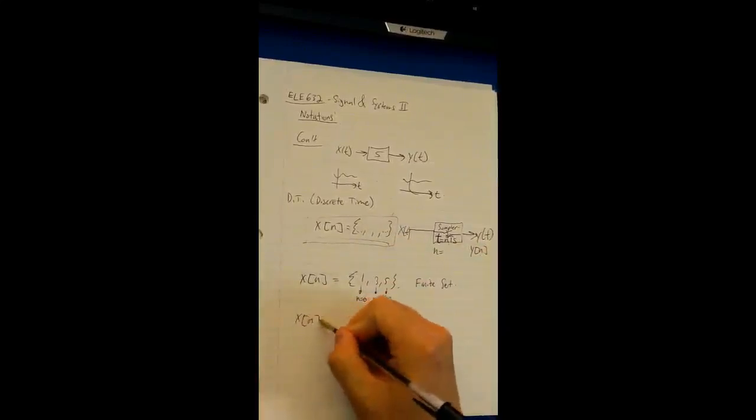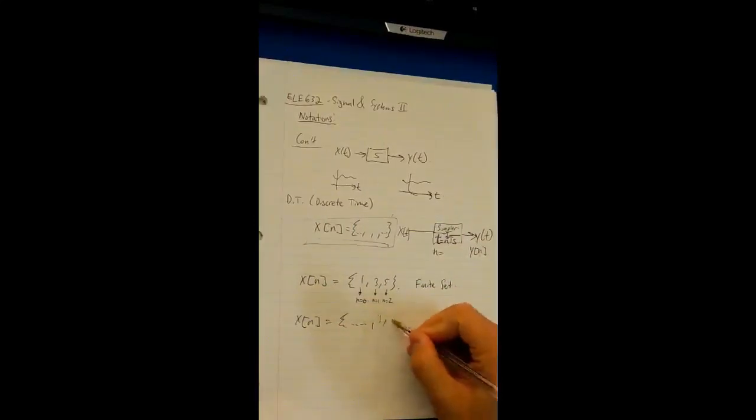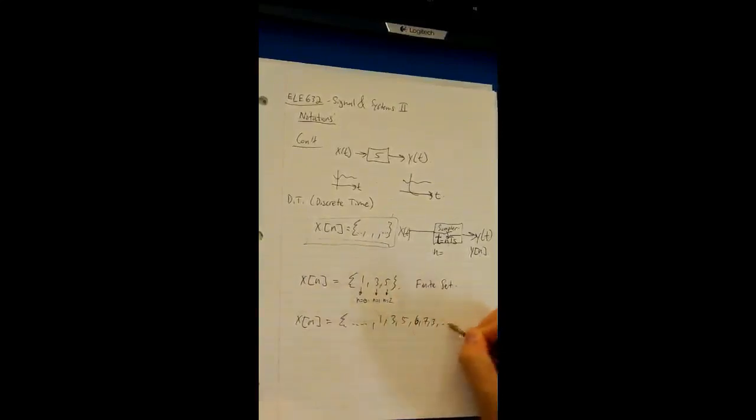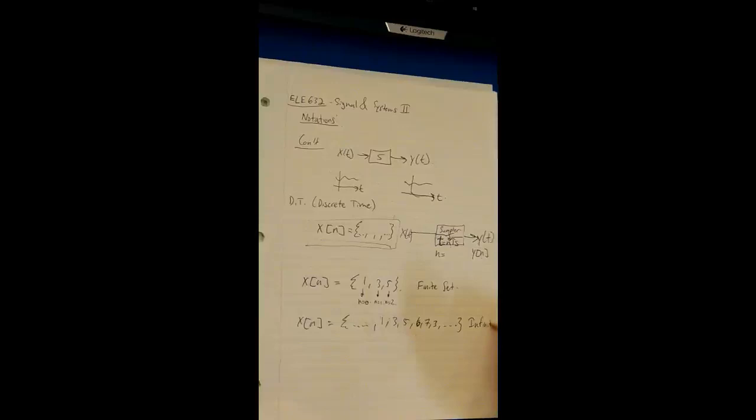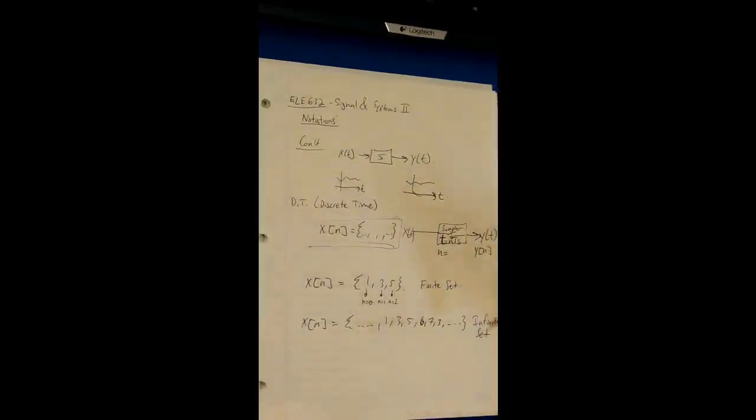Another one is X of N, where we have an infinite set, where we don't really know what exact numbers come out. 6, 7, 3, dot dot dot. So this is called an infinite set. In terms of these infinite sets and finite sets, we can use these equations to find the impulse response, and also the zero state response, and the total system response as well.